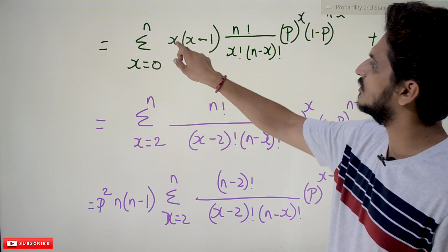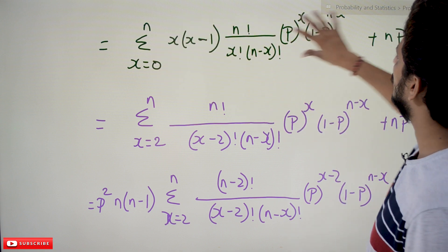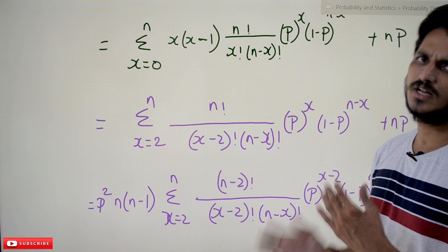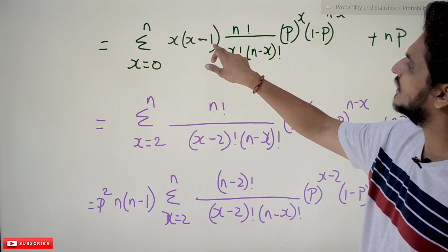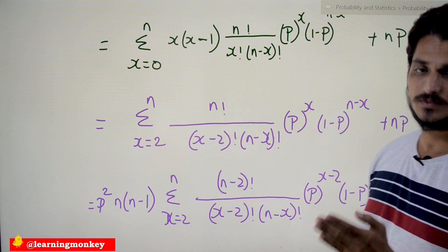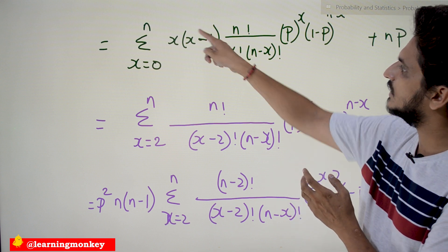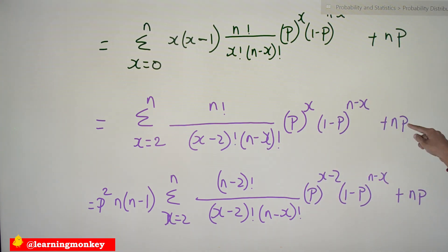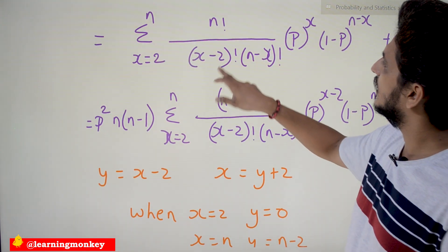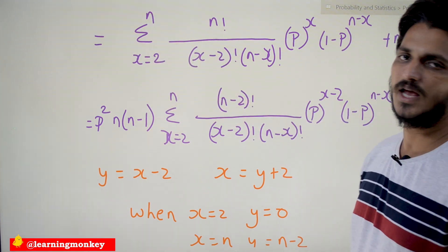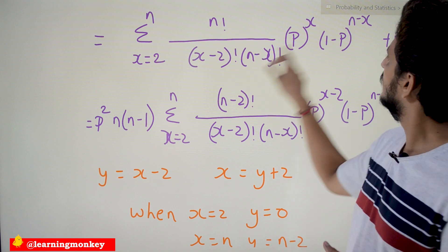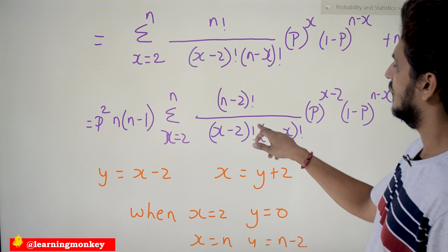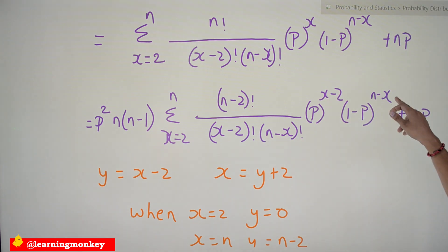When x=0 or x=1, the x(x−1) factor equals 0, so we take the sum from x=2 to n. Writing x! = x·(x−1)·(x−2)!, the x(x−1) in the numerator cancels with x(x−1) in the denominator, leaving n!/ ((x−2)!·(n−x)!) · p^x · (1−p)^(n−x). We factor out n(n−1) from n! and p² from p^x, giving n(n−1)p² · Σ [(n−2)! / ((x−2)!·(n−x)!)] · p^(x−2) · (1−p)^(n−x).